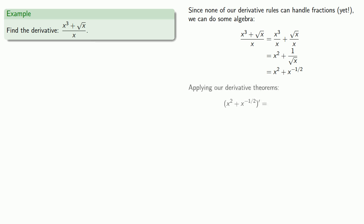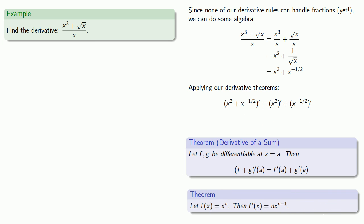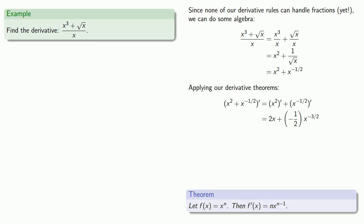The type of function is a sum, and so we can break this apart as the sum of the derivatives. And now, both terms are of the form x to the power n, so the derivatives will be... And we should do a little bit of algebraic cleanup to get our final answer.